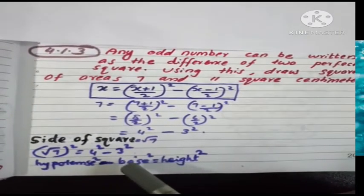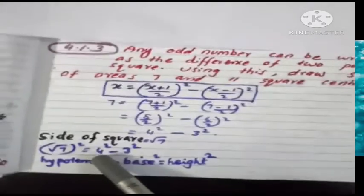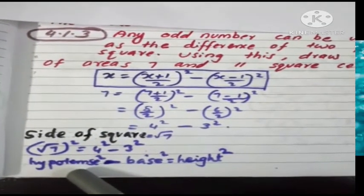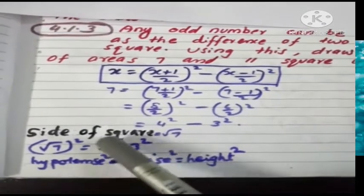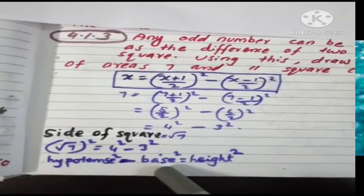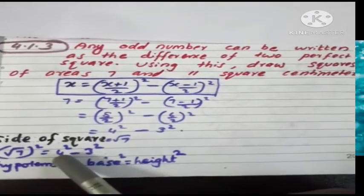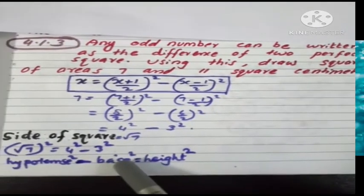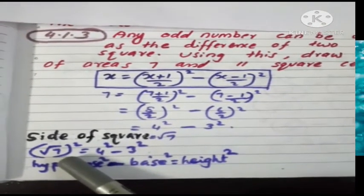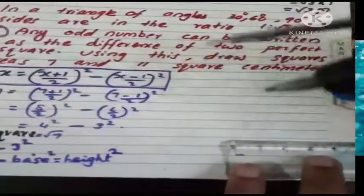Then side of square right triangle. Difference from right triangle. Base and height. I know the right triangle, height is root seven. Base three centimeter.